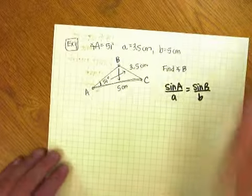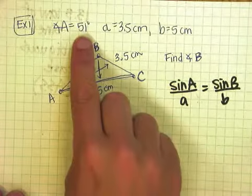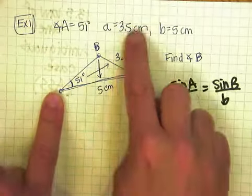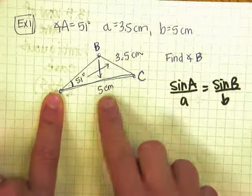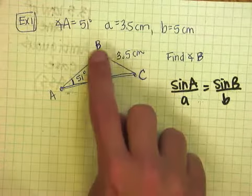Now we looked at this because then if you start paying attention to problems in the textbook, the problem in the textbook will give you information like angle is 51 degrees, the side is 3.5, the side is 5. And you use the law of sines to figure out what angle B is.